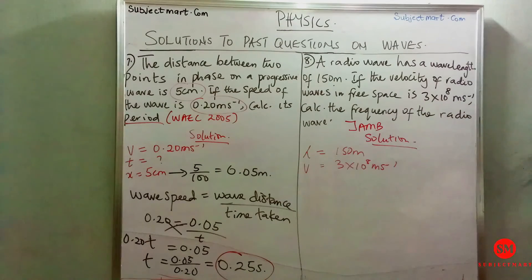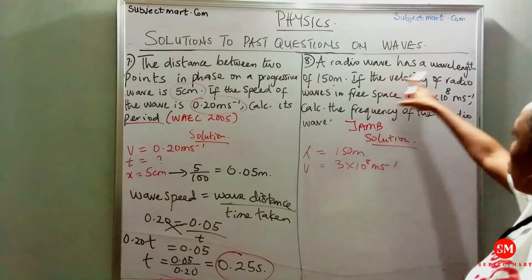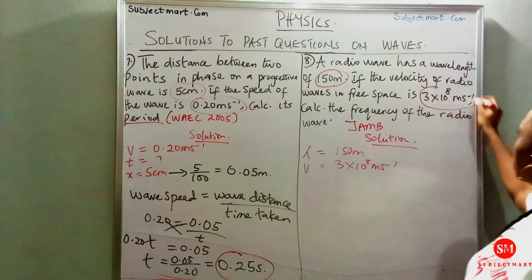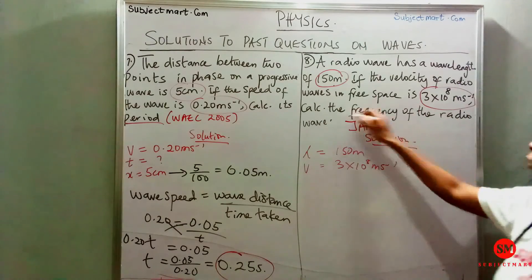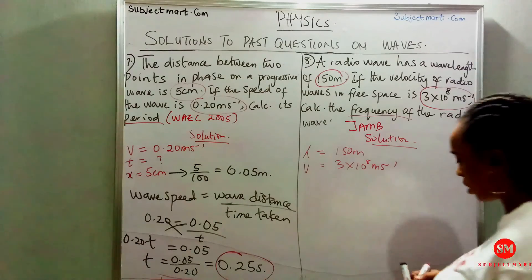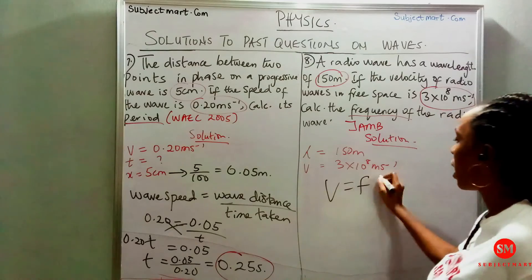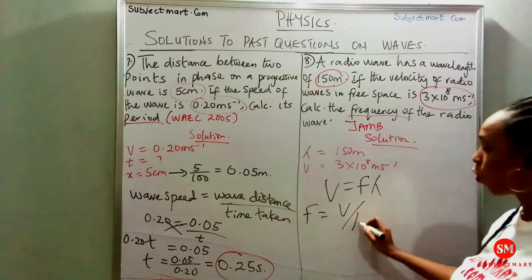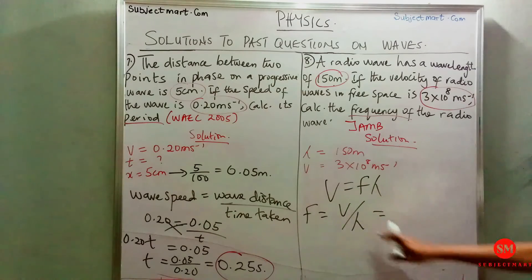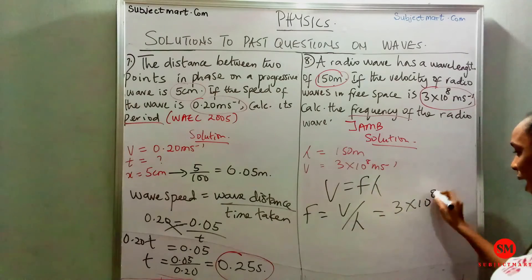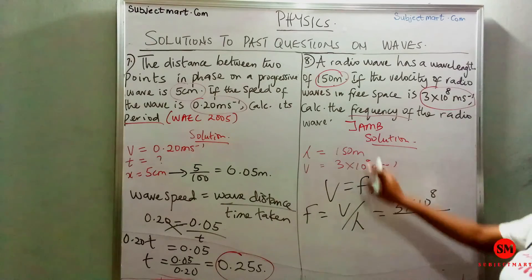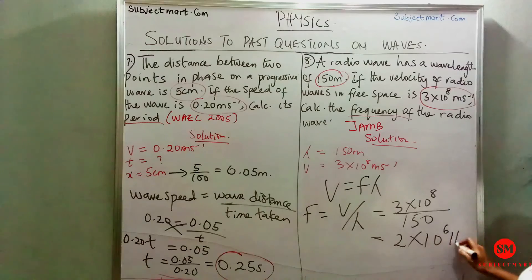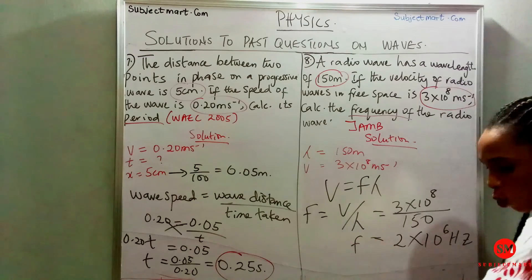The next question says a radio wave has a given wavelength and a radio wave velocity. We need to find the frequency. Recalling v equals f lambda and making f the subject: f equals v over lambda. Our v is 2 times 10 to the power 8, and lambda is 150. Dividing gives 2 times 10 to the power 6 Hz, which is the frequency.